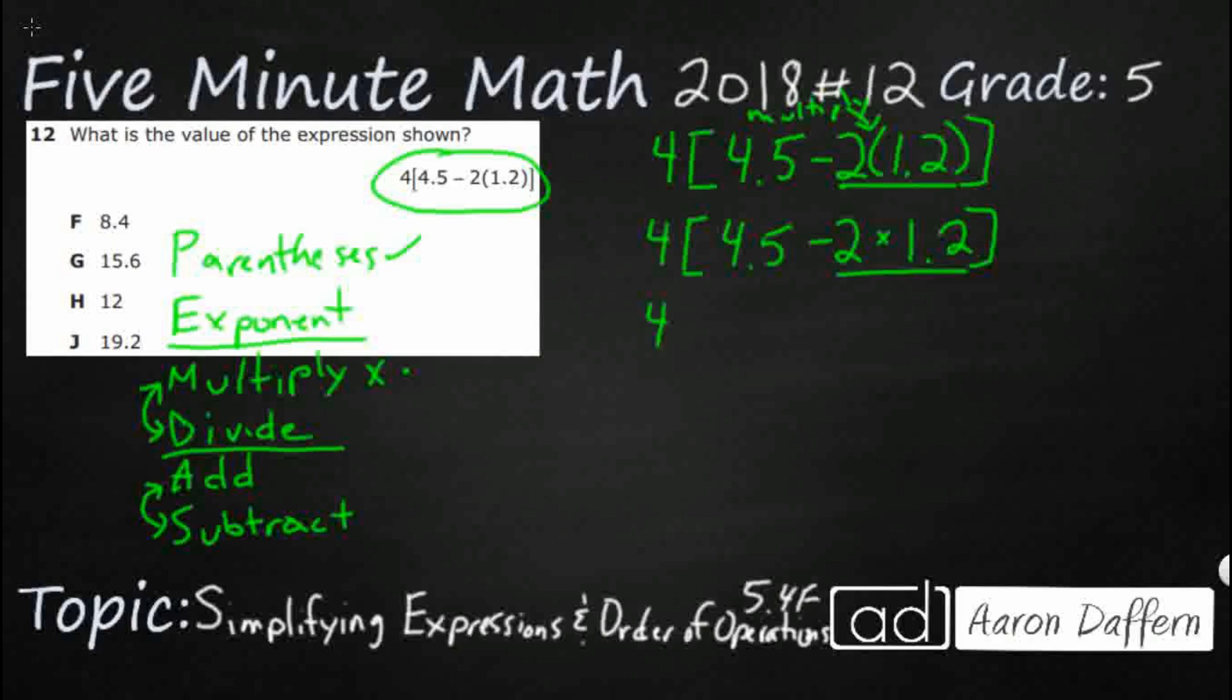We're going to rewrite everything else, we're just going to keep bringing it down. 4.5 minus 2 times 1.2, let's just take 1.2 and double it, and that is going to be 2.4.